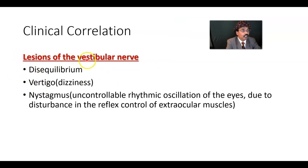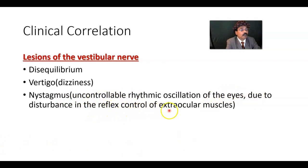If there is a lesion in the vestibular nerve, there will be disequilibrium — the person cannot maintain equilibrium. There will be vertigo and dizziness. There will also be nystagmus: uncontrolled rhythmic oscillation of the eye due to disturbance in the reflex control of the extraocular muscles. This occurs because the vestibular nerve is connected to the medial longitudinal fasciculus, which connects the oculomotor, trochlear, and abducens nerves — so the muscles supplied by those nerves will not work properly, resulting in nystagmus.